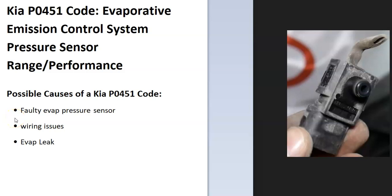Today I'm talking about a Kia with the P0451 code — what it is and how you go about fixing it. The P0451 is an evaporative emission control system pressure sensor range/performance code. Modern cars have an EVAP system that helps contain gas vapors inside the gas tank; they get sent back into the engine and burnt off so they don't escape into the atmosphere. The onboard computer is seeing a problem with this, mainly with the pressure sensor, which helps monitor the system.